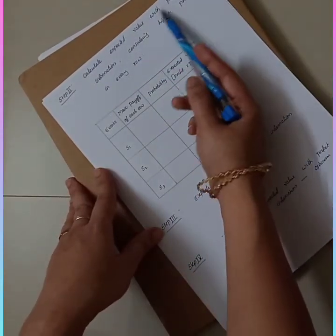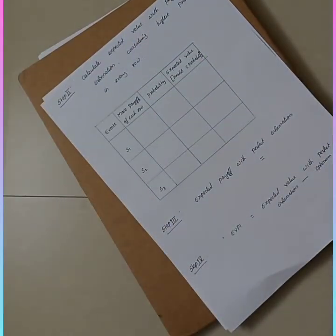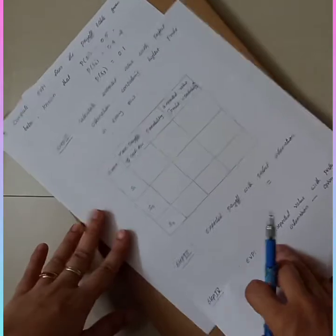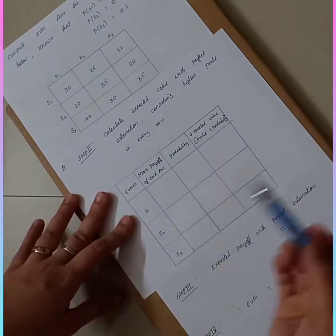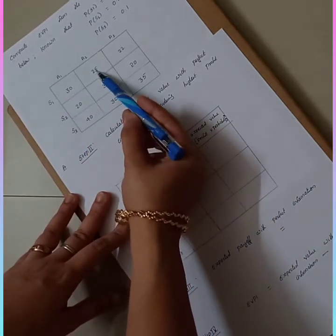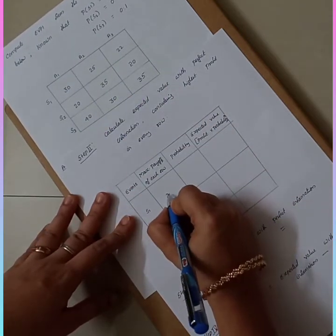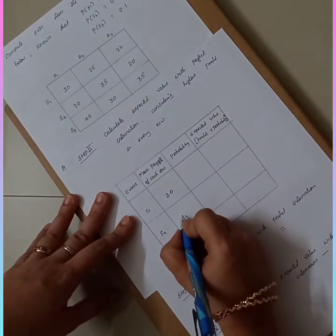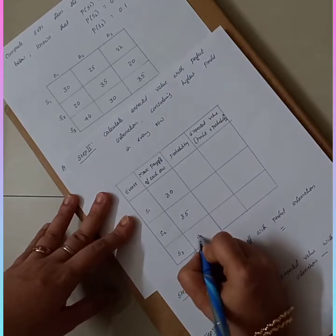Step two: calculate the Expected Value with Perfect Information by considering the highest profit in every row. For state S1, the payoffs are 30, 25, and 22 — the maximum is 30. For S2, the payoffs are 20, 35, and 20 — the maximum is 35. For S3, the payoffs are 40, 30, and 35 — the maximum is 40.